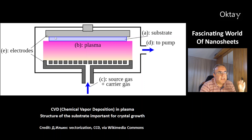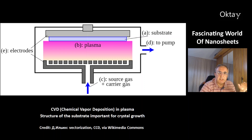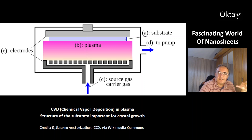This is how CVD — chemical vapor deposition in plasma — works. This is the substrate, and the nanosheets are grown on it. The structure of the substrate is important because it determines the structure of the nanosheets. You need to deliver the atoms at a low speed to make sure that the crystal grows slowly and in high order.